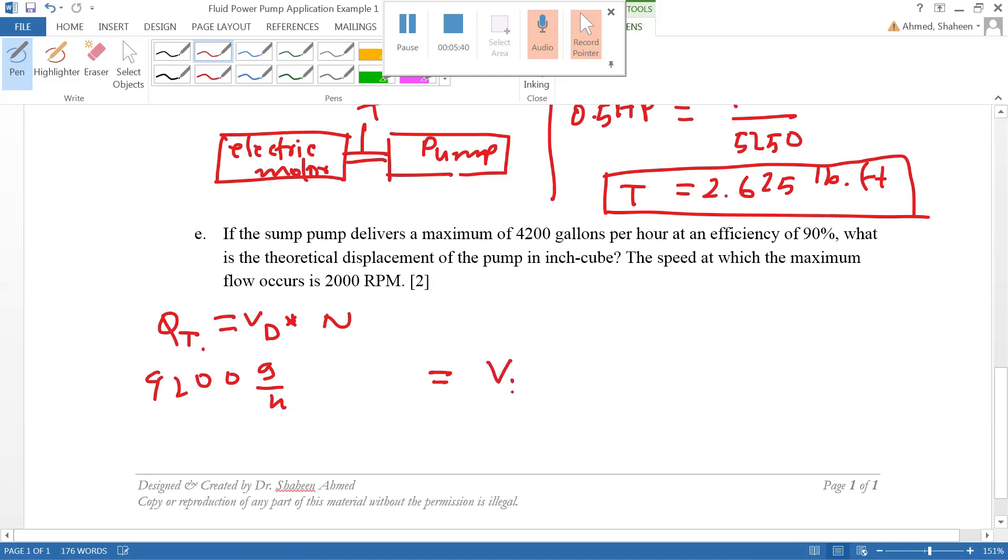We need to convert into some relevant units. VD is typically in inch cube per rev, but the rev is kind of silent. People simply say inch cube, which implies every revolution how many inch cube of fluid is delivered. So then we have 2000 rev per minute. Now we got minute on this side and hour on this side, so we have to convert. One hour is 60 minutes. Now I have to convert the gallon because gallon is a big unit. One gallon is 231 inch cube.